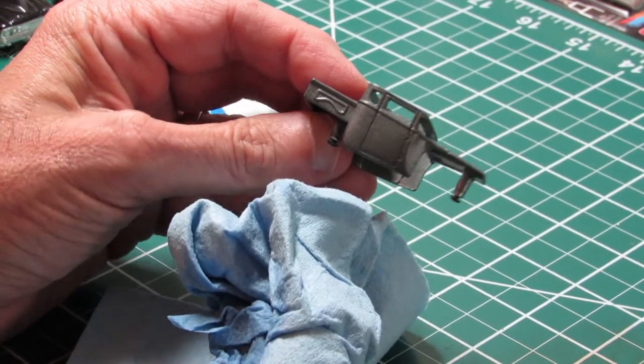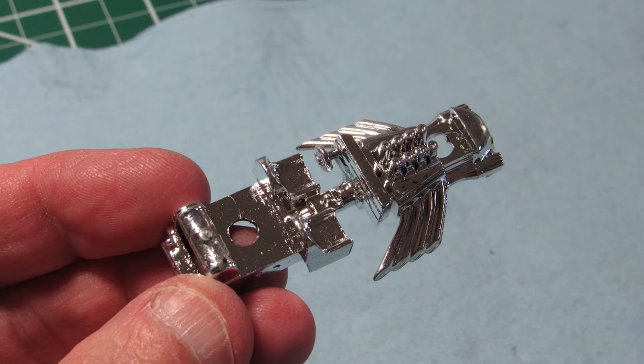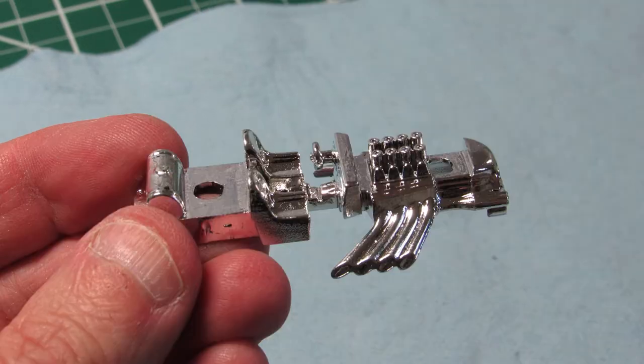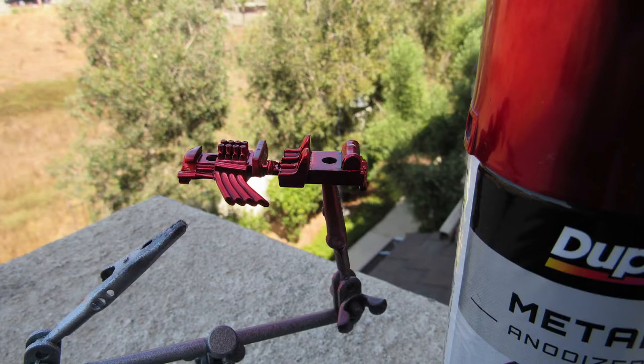And then I went into the chrome interior. I did not do anything to this other than wash it. Washed it in soapy water. Rinsed it off to get it ready for the metal cast paint. I wanted this to be blood red. So I went with the metal cast, the Dupli-Color metal cast paint.